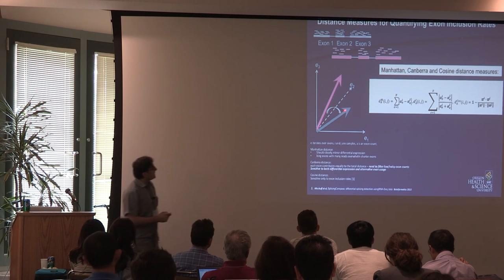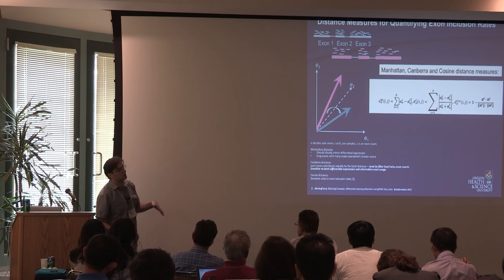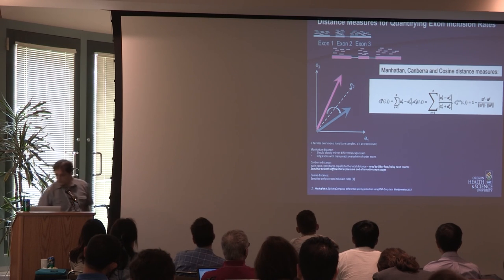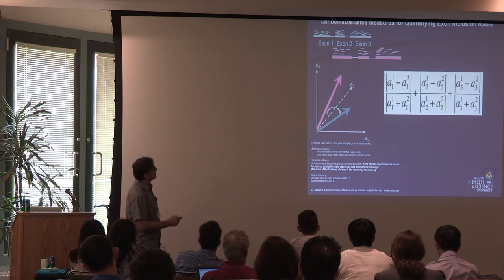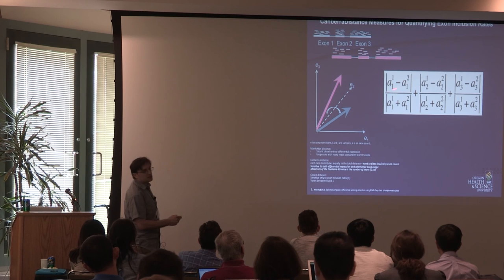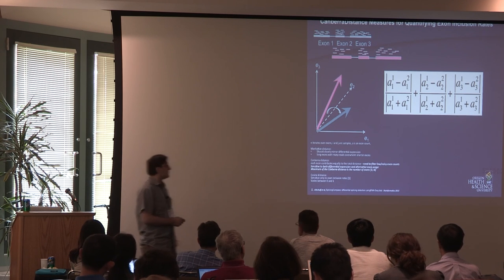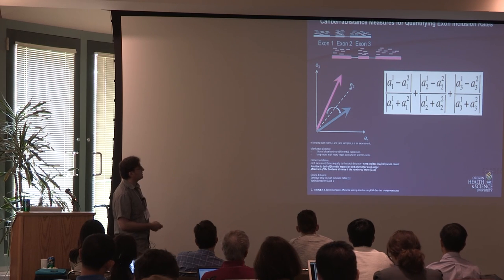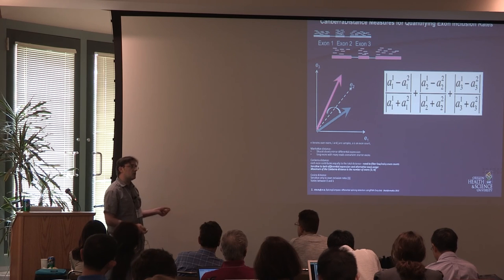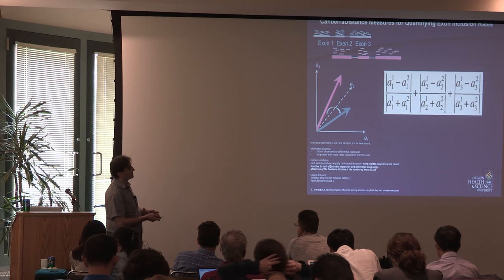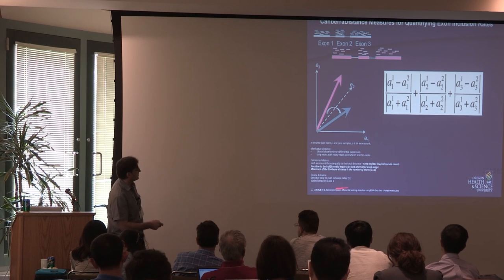Choosing an appropriate distance measure has important effects on the analysis — different distance measures capture different biological properties of your data. If you double the expression level of a gene and each exon, the vector becomes twice the length, but the angle doesn't change. So if you're interested in just splicing and don't want contamination by differential expression, the cosine distance is what you should use — it captures alternative splicing but is insensitive to overall changes in expression level. There's also a great tool called Splicing Compass that uses the cosine distance combined with an F-test to compare distances between groups versus within groups to find differential splicing.